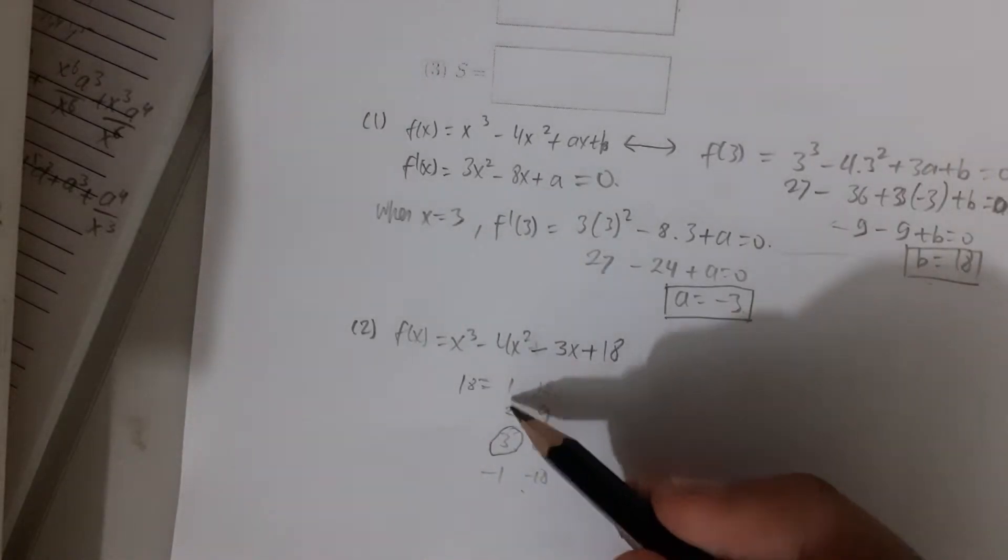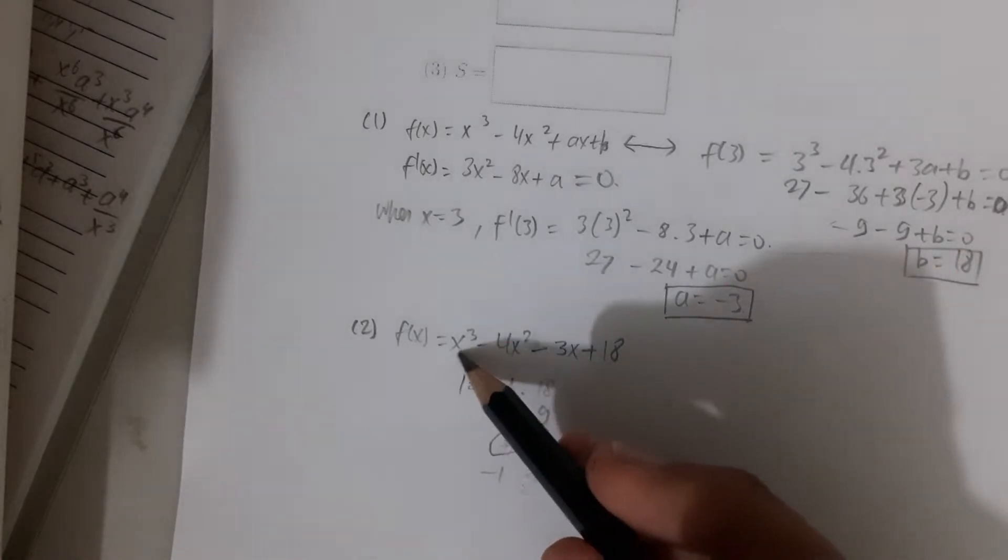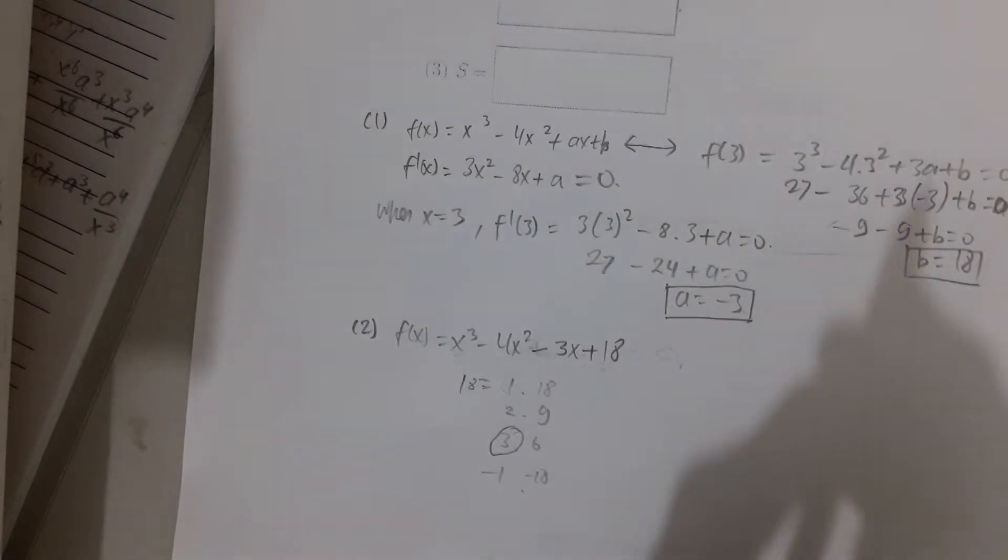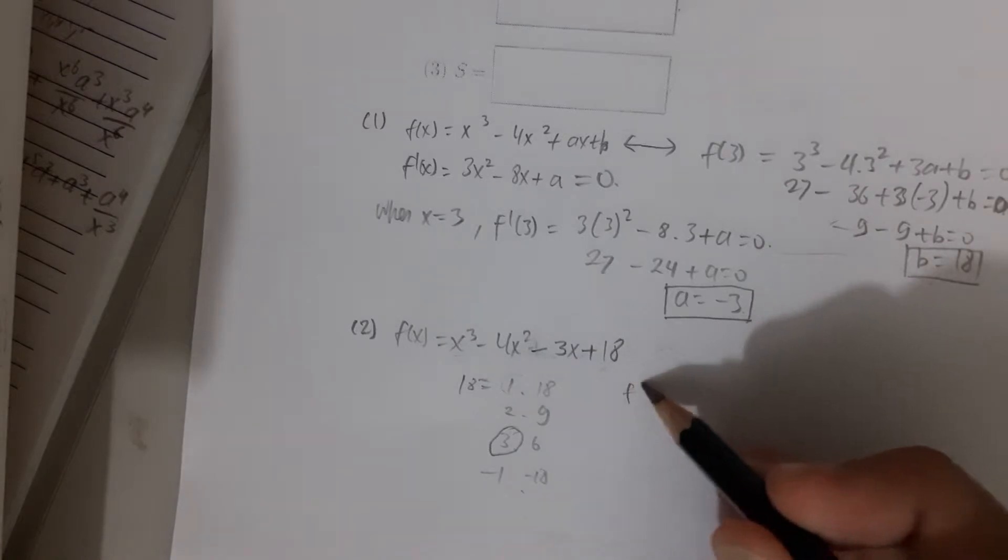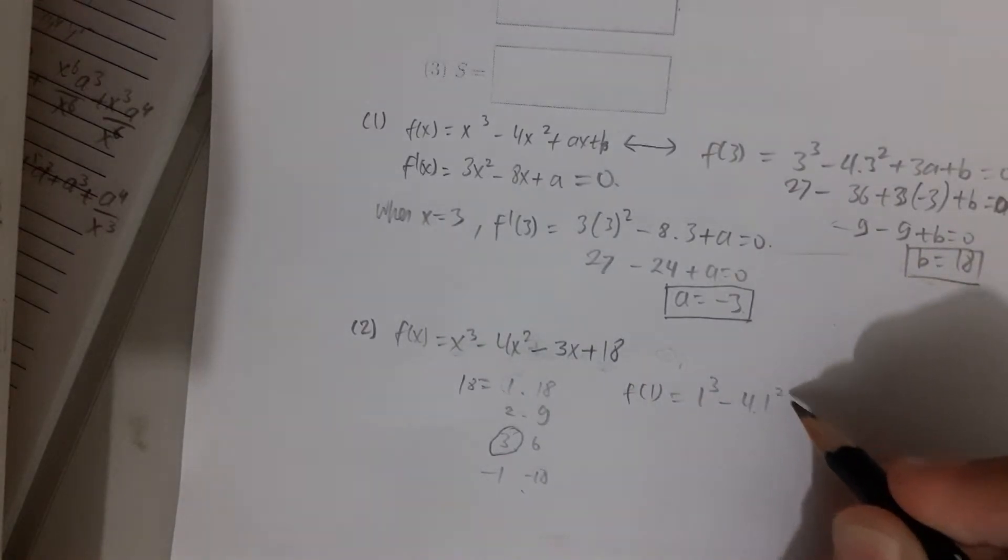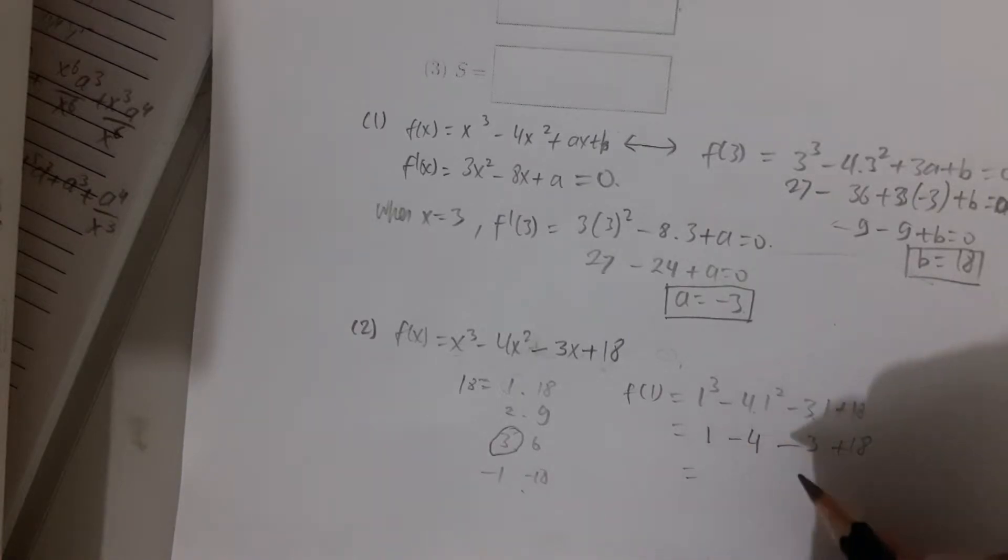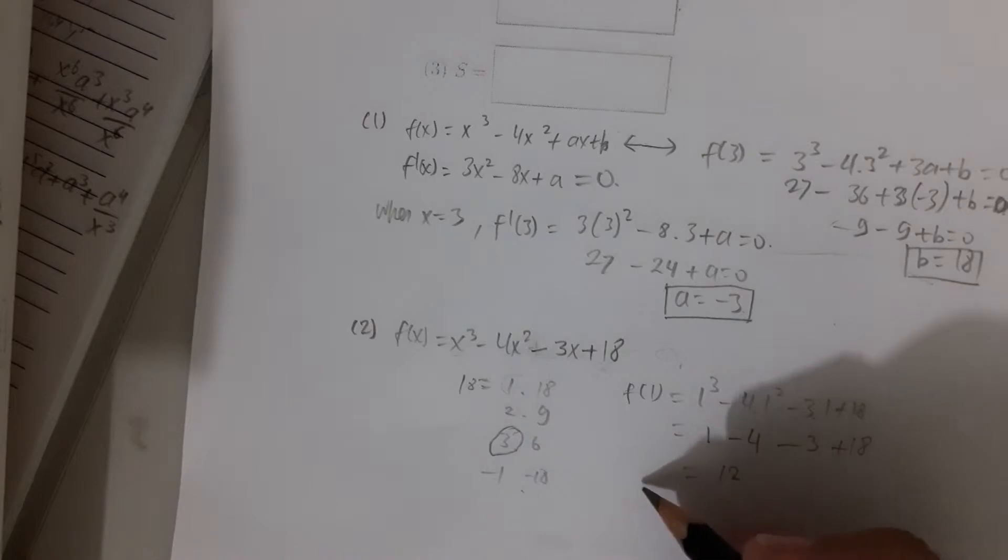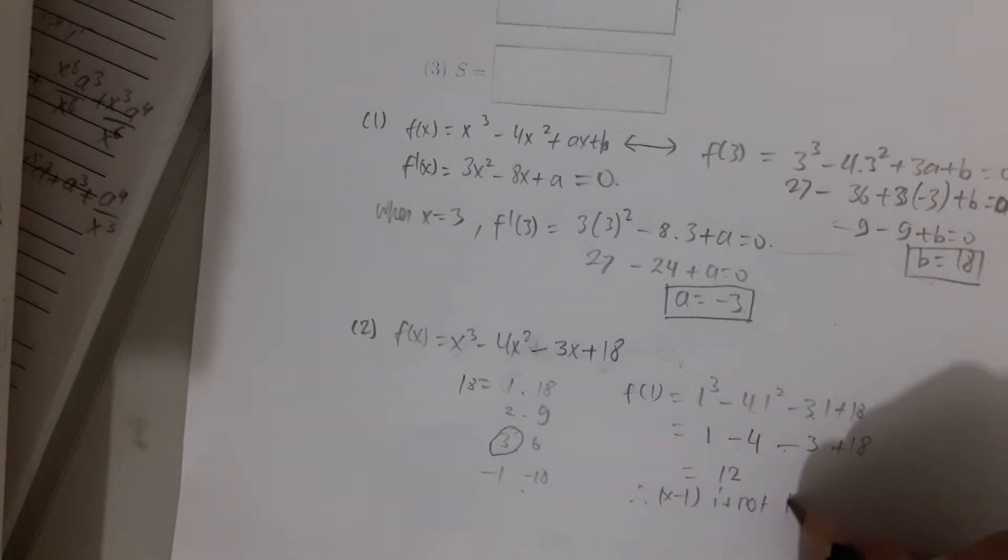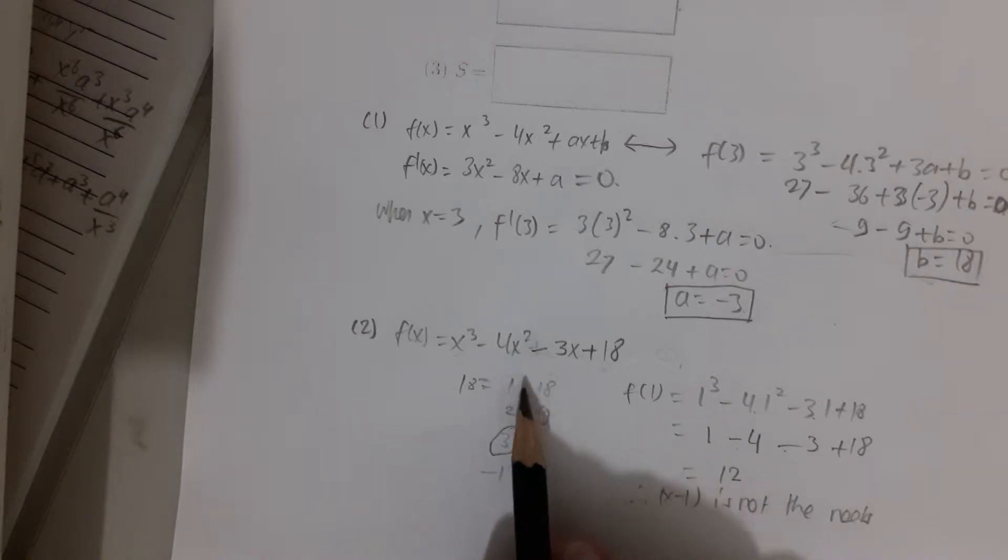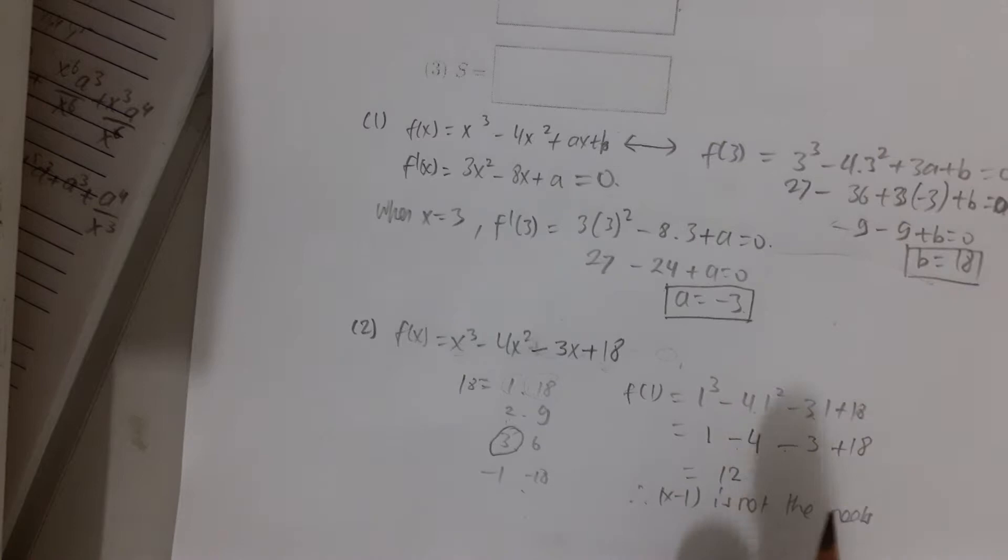So 1 times 18 is possible, 2 times 9, 3 times 6, and then minus 1 times minus 18, and so on. So I did try like this and eventually I got into 3. The point is, when you calculate, when you put these numbers into this equation, if you put, for example, 1, if this results in 0, then it is one of the factors or one of the roots of the function. So let me show you. Let's say we want to put f(1).